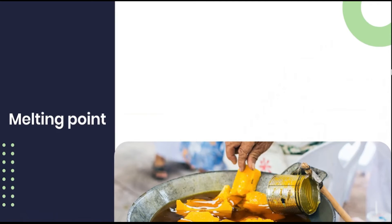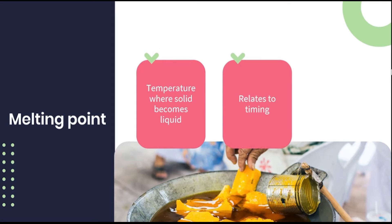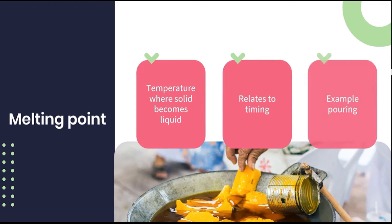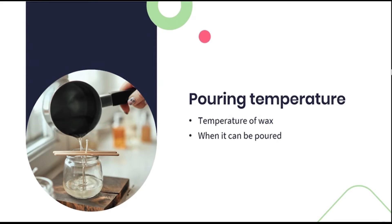We speak about a melt point or melting point when we refer to the temperature at which wax will begin transforming from a solid substance to a liquid. This is exceptionally important because it relates to the timing of when we need to stop heating our wax and at what point we can pour it. This leads us to our pouring temperature — it is the temperature of warm melted wax at which it is recommended that it be added to a mould or container. Pouring wax that is either too hot or too cold will certainly have an effect on the aesthetic or functionality of your candle.